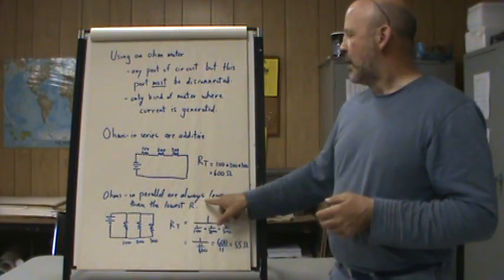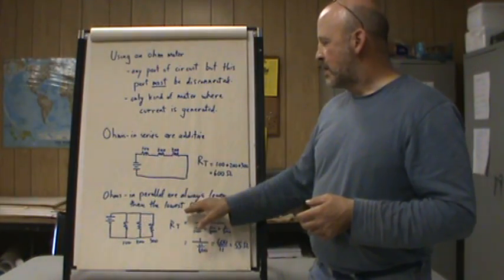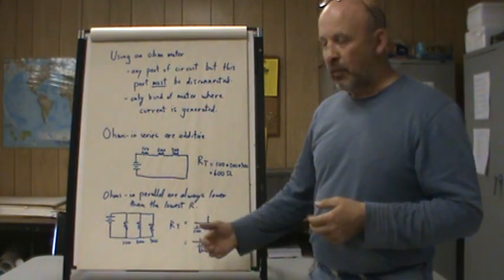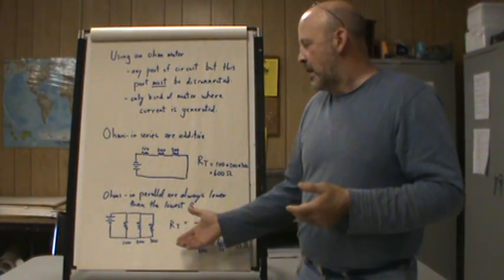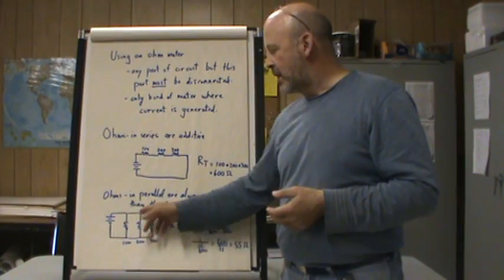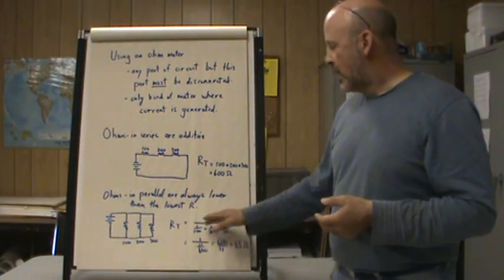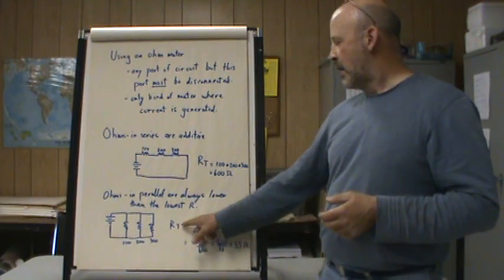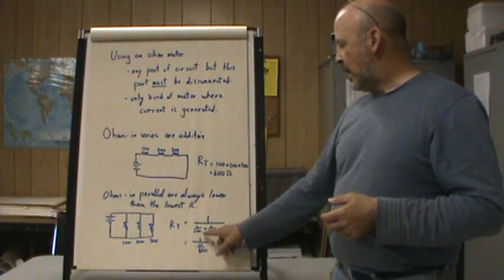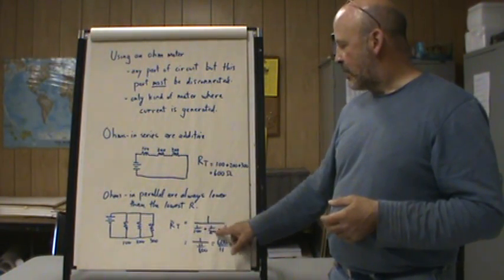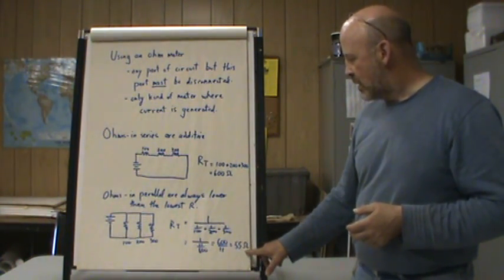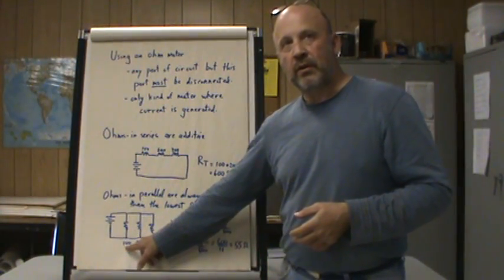On the other hand, in parallel, the total resistance is always going to be lower than the lowest of the possible paths. Because if the current can flow through the one with the lowest resistance, it will, but it actually has two other paths making it even easier. So the calculation is a little more. The total resistance is the inverse of the inverse of each of the resistances added together. So in this case, if you calculate the total resistance for all three, it's 55 ohms, which is lower than even the lowest resistor.